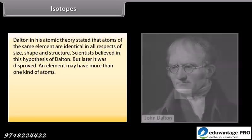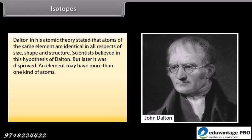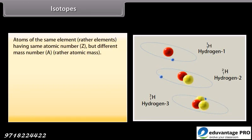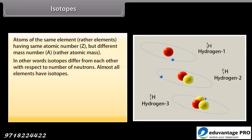Isotopes. Dalton in his atomic theory stated that atoms of the same element are identical in all respects of size, shape and structure. Scientists believed in this hypothesis of Dalton but later it was disproved. An element may have more than one kind of atoms. They may have same number of electrons and protons, that is, same atomic number, but they may differ from each other with respect to number of neutrons, that is, they may have different mass number or atomic mass. Such atoms of an element are known as isotopes. Atoms of the same element, rather elements having same atomic number Z but different mass number A, rather atomic mass. In other words isotopes differ from each other with respect to number of neutrons. Almost all elements have isotopes.